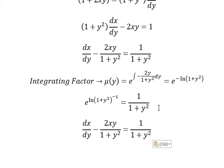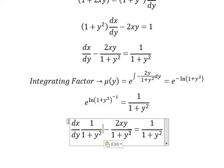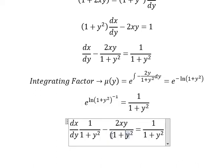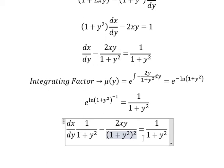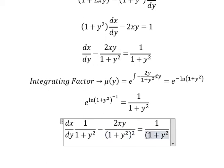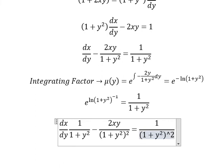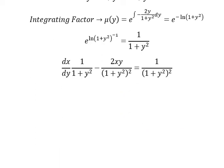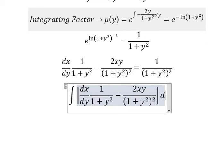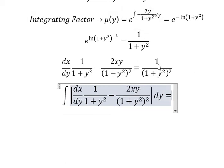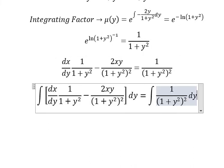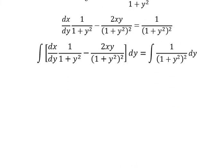So we have one over one plus y square. That means we multiply both sides by this one. Now we put the integral for both sides.